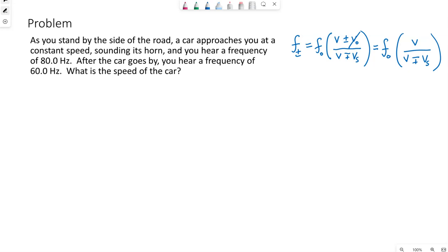In this particular case, we're not given the actual frequency of the car's horn, but we are told two different situations. So as the car is driving towards us, the car is the source, the car is the one that has the honking horn. As that drives towards us, we hear, so f plus or minus is 80 hertz. That's what we hear.